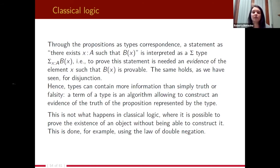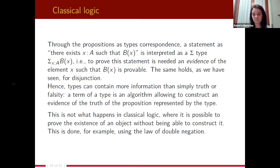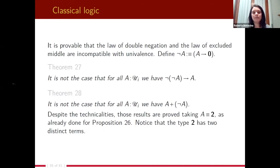This happens in intuitionistic logic, but not in classical logic. In classical logic, we can prove the existence of an object which we are unable to construct — for example, using the law of double negation. It is provable that both the law of double negation and the law of excluded middle are incompatible with univalence.